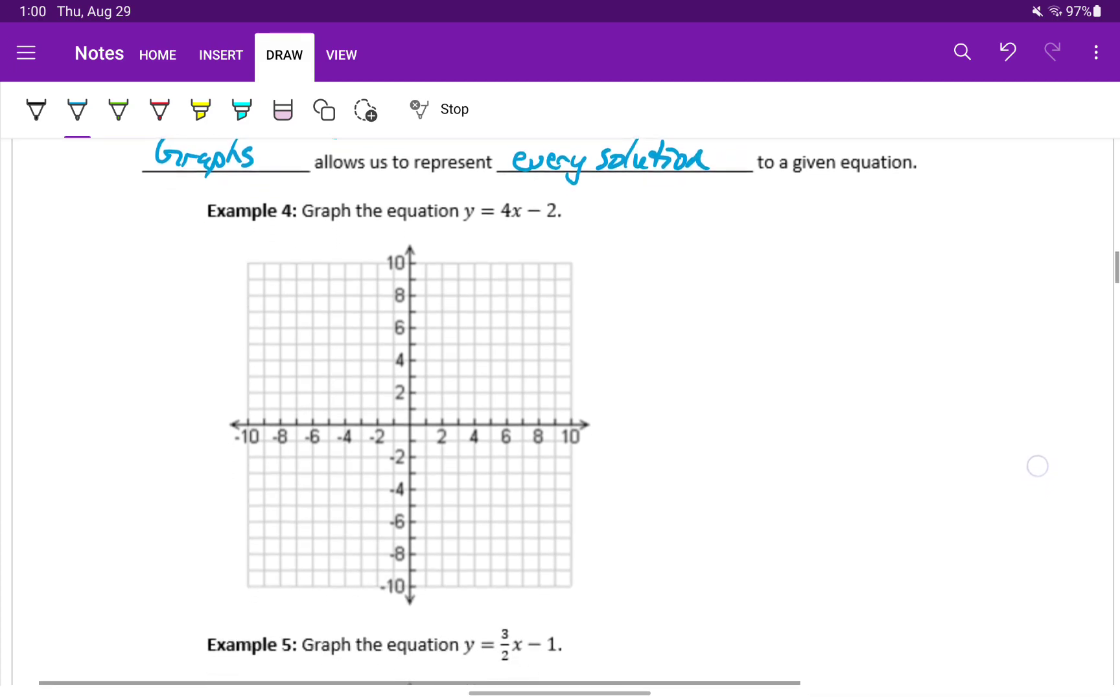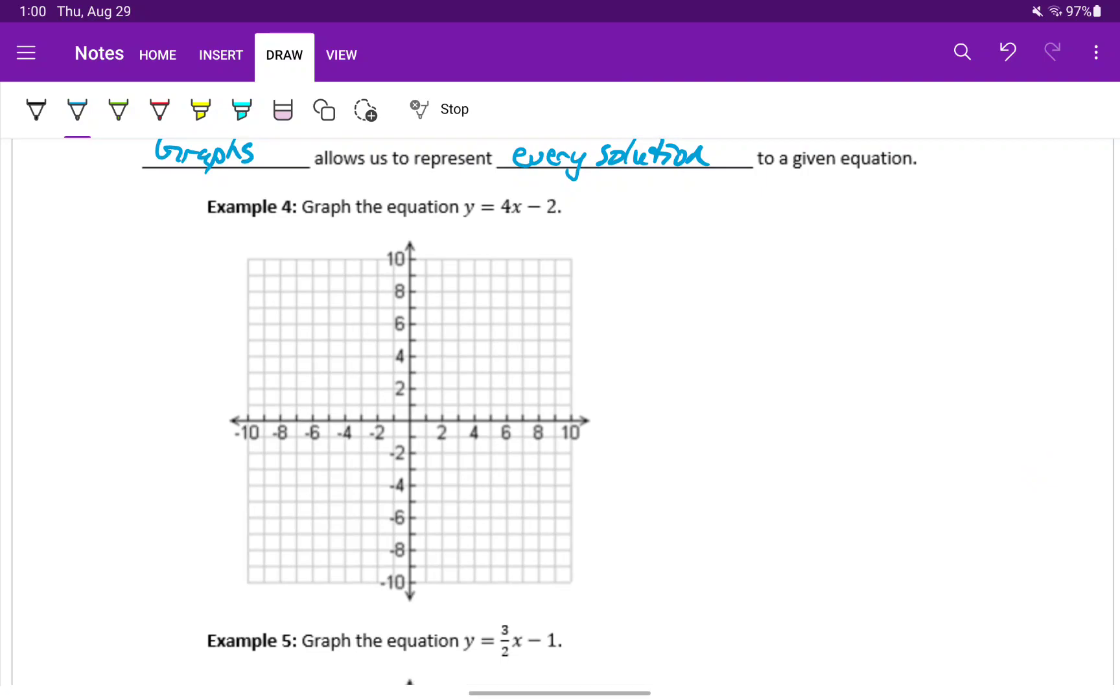For instance, for this equation y equals 4x minus 2 that we've been talking about, we could plot the first point that we found, 1 comma 2, and the second point that we found in example 3, which is 2 comma 6.